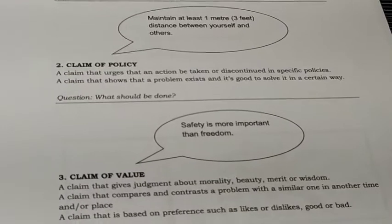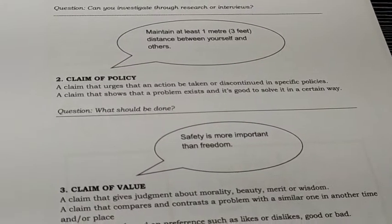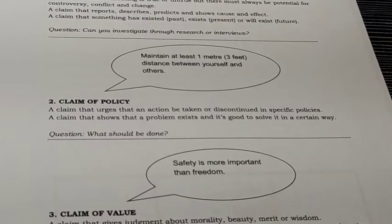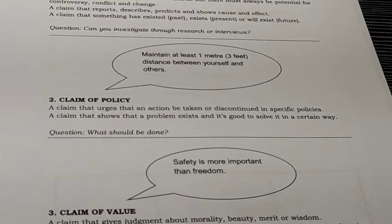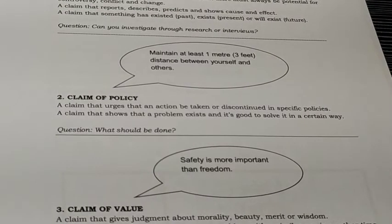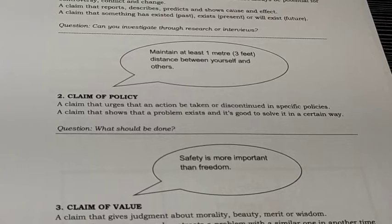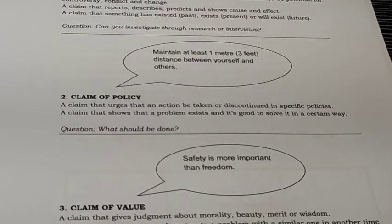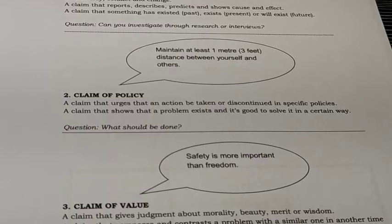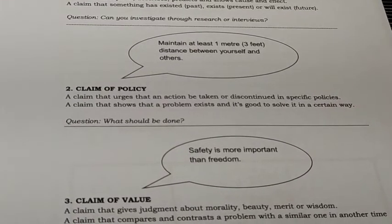The second claim is the claim of policy — a claim that urges that an action be taken or discontinued in specific policies, and a claim that shows a problem exists and it's good to solve it in a certain way. For example: 'Maintain at least one meter or three feet distance between yourself and others.' That is a policy we follow as a protocol, especially during the pandemic. The claim of policy examines how effective it is to follow that particular policy.